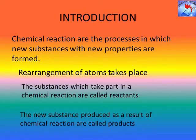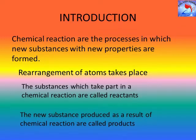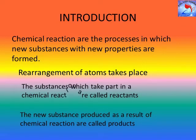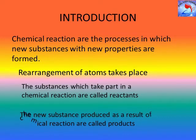During a chemical reaction, a rearrangement of atoms takes place between the reacting substances to form new substances having entirely different properties. The atoms of one element do not change into those of another element — only a rearrangement of atoms takes place. The substances which take part in chemical reactions are called reactants. New substances produced as the result of chemical reactions are called products.